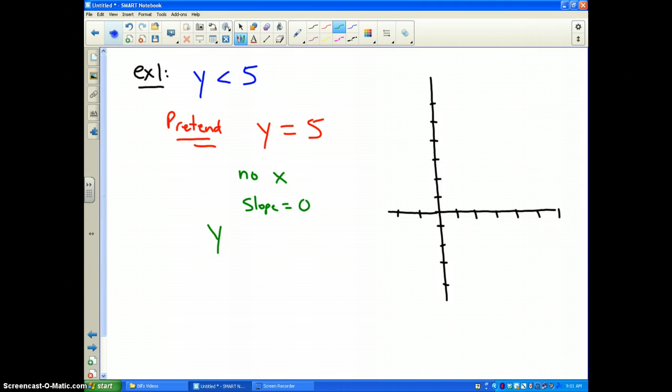So, in other words, this equation is kind of like y equals zero x plus five. Therefore, our five is really the y-intercept value. And we all know that just y equals five is a horizontal line.